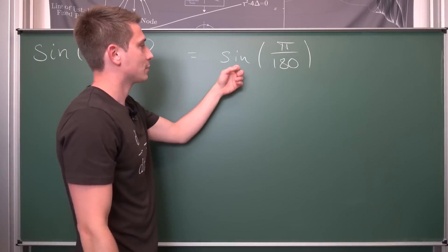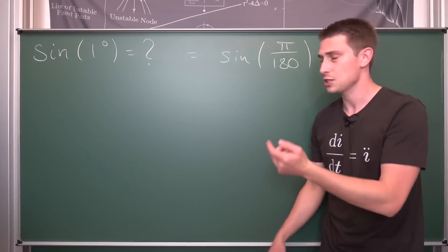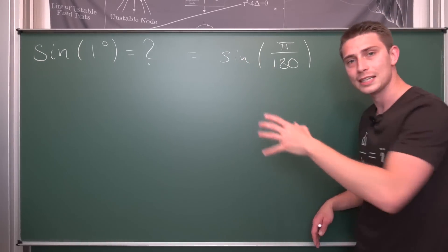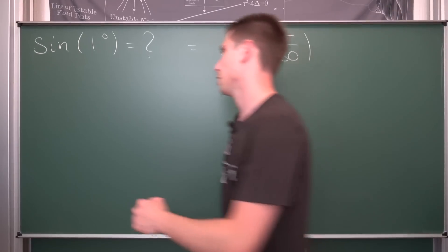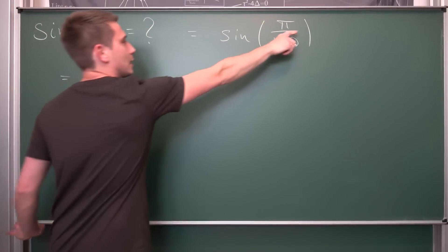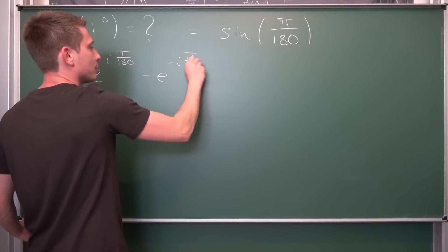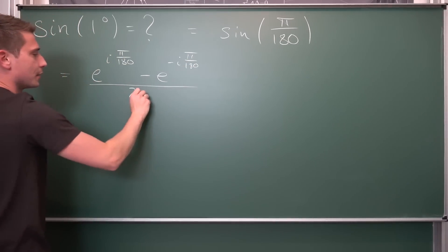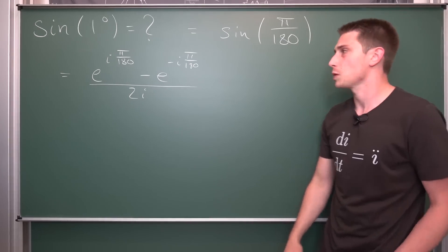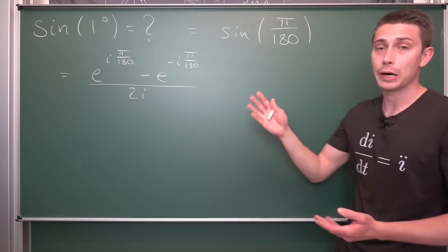Now we are in radian territory. What we are going to do is take a look at the Euler expansion of the sine. If you don't know what this is, take a look at a few links in the description. Basically, we are going to write this as being the odd part of the complex exponential function. Namely, this is going to be e to the i times pi over 180, minus e to the negative i pi divided by 180, all divided by 2i. This right here is the Euler expansion, and it's actually pretty useful.